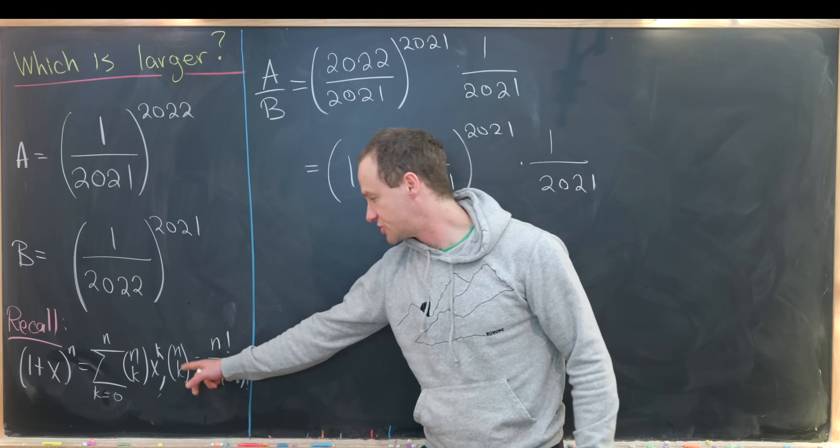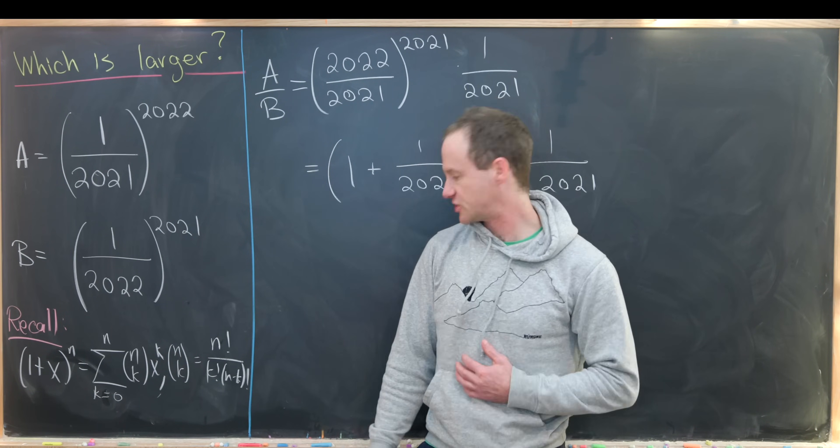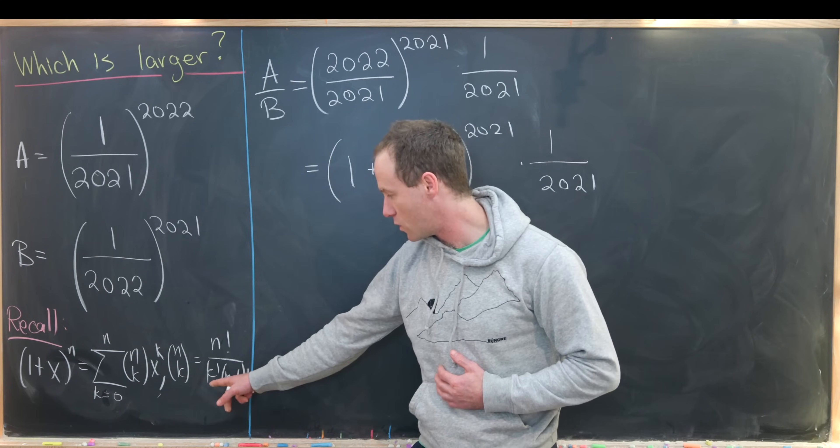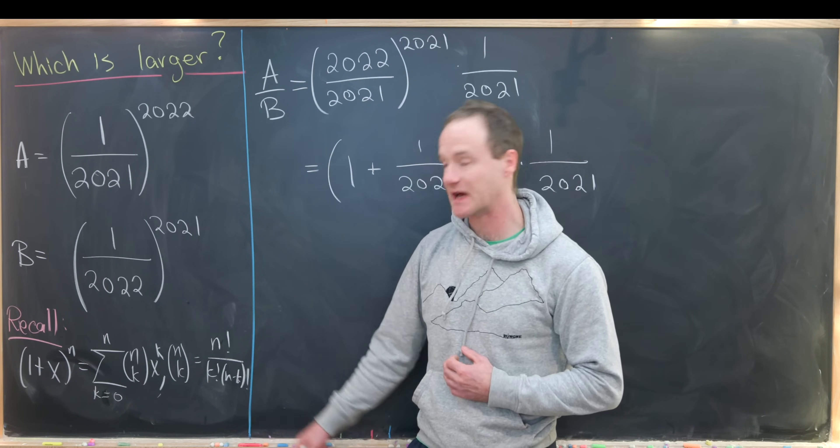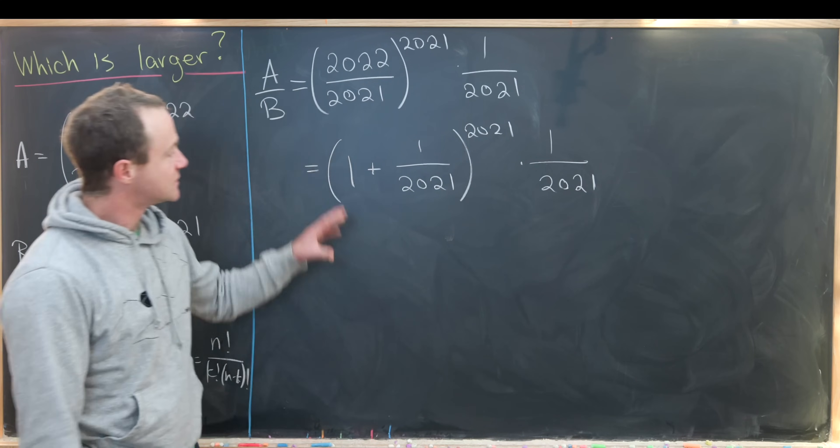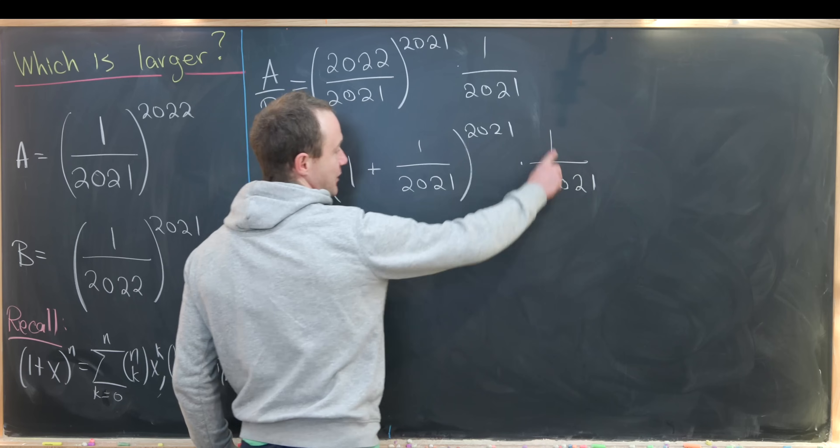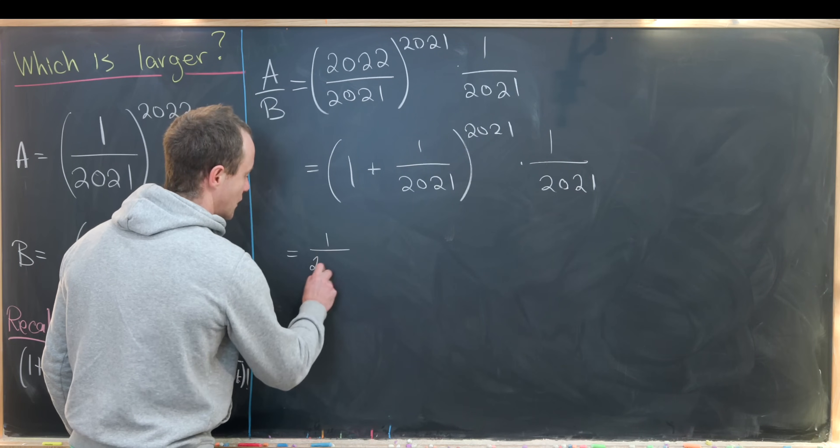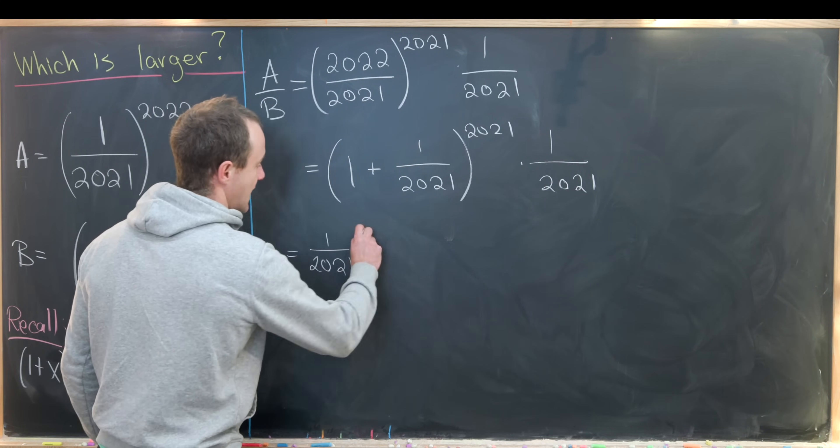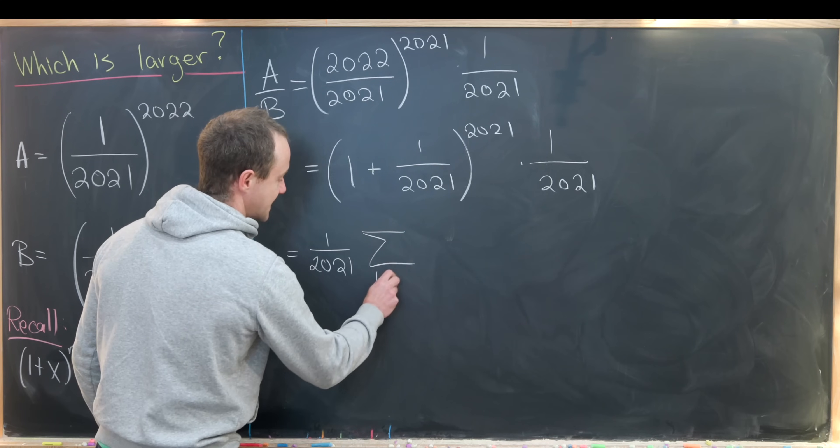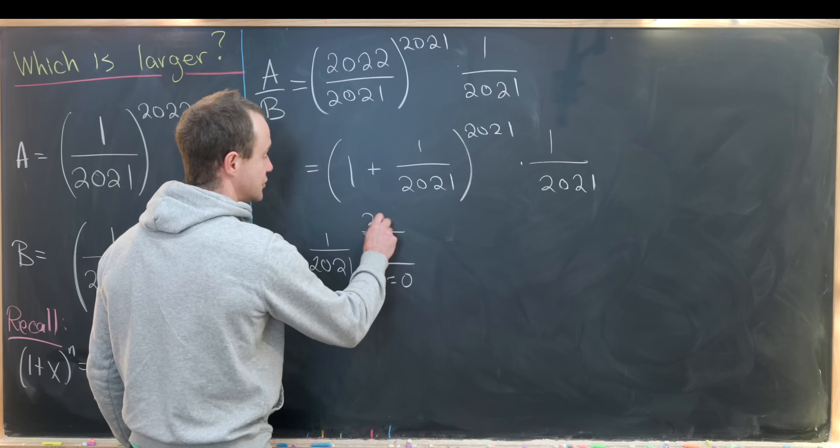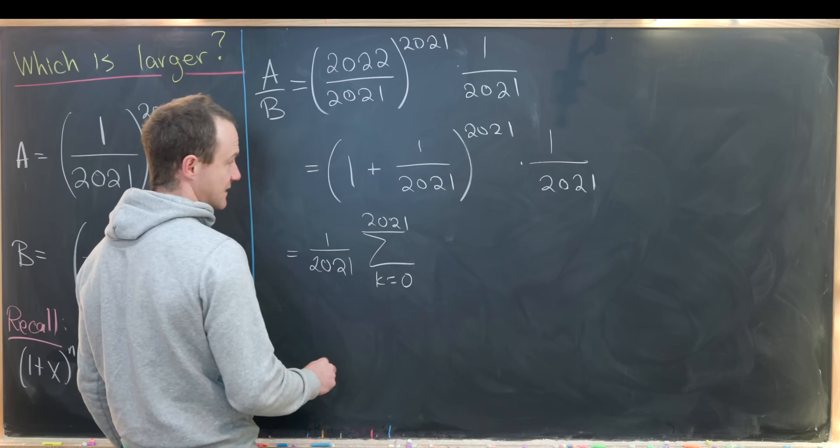Where n choose k is this binomial coefficient given by n factorial over k factorial times n minus k factorial. So that's what I'll do. I'll bring this 1 over 2021 out front.